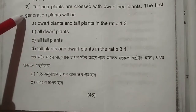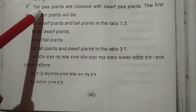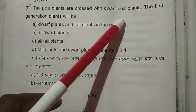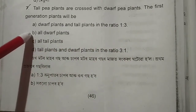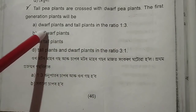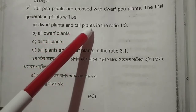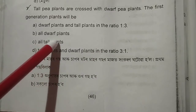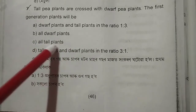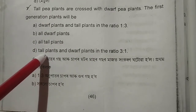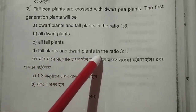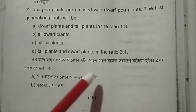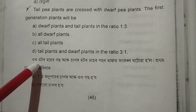Now come to question number seven. Tall pea plants are crossed with dwarf pea plants. The first generation plant will be: a) dwarf plants and tall plants in ratio 1:3, b) all dwarf plants, c) all tall plants, d) tall plants and dwarf plants in the ratio 3:1.